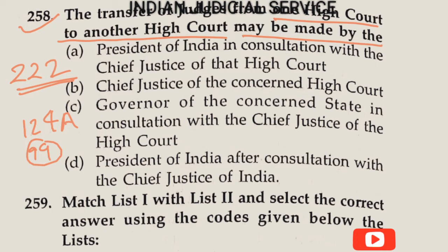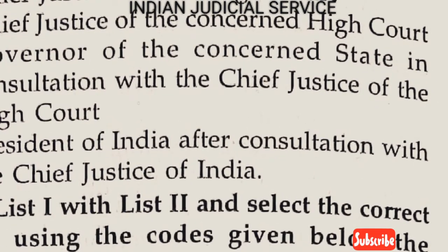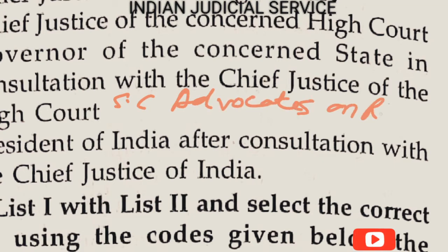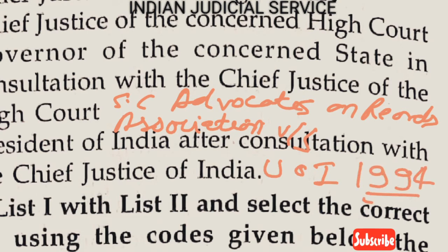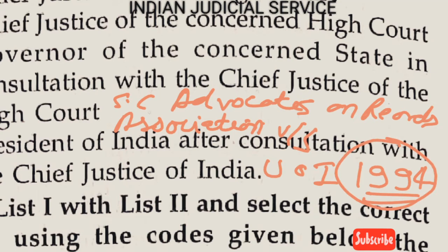According to the case of Supreme Court Advocates on Record Association versus Union of India 1994, the Supreme Court held that the opinion of the Chief Justice of India is determinative — meaning compulsory — whenever the President of India transfers a High Court judge to another High Court.